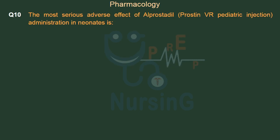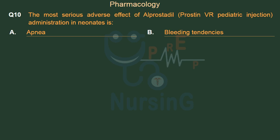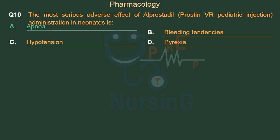The most serious adverse effect of alprostadil (Prostin VR Pediatric injection) administration in neonates is: Option A: Apnea. Option B: Bleeding tendencies. Option C: Hypotension. Option D: Pyrexia. The right answer is Option A: Apnea.